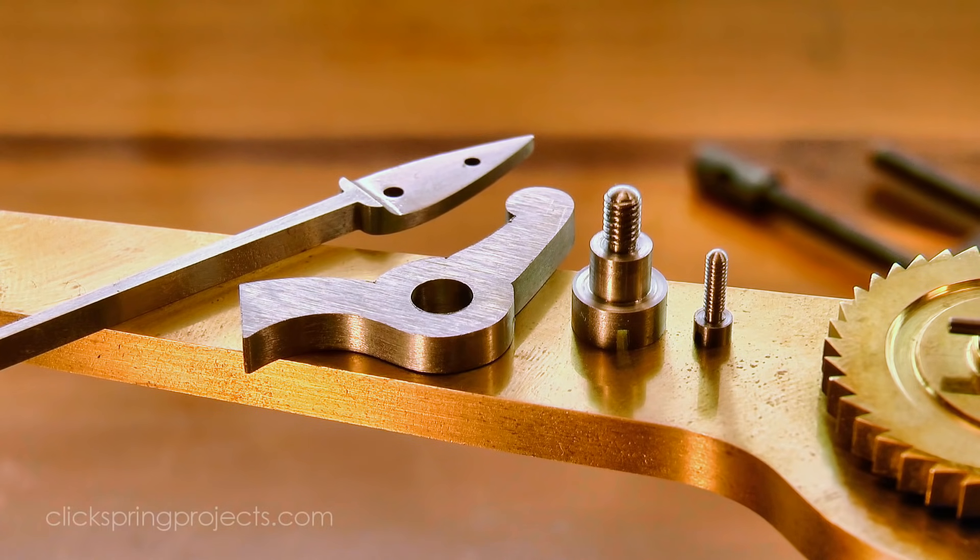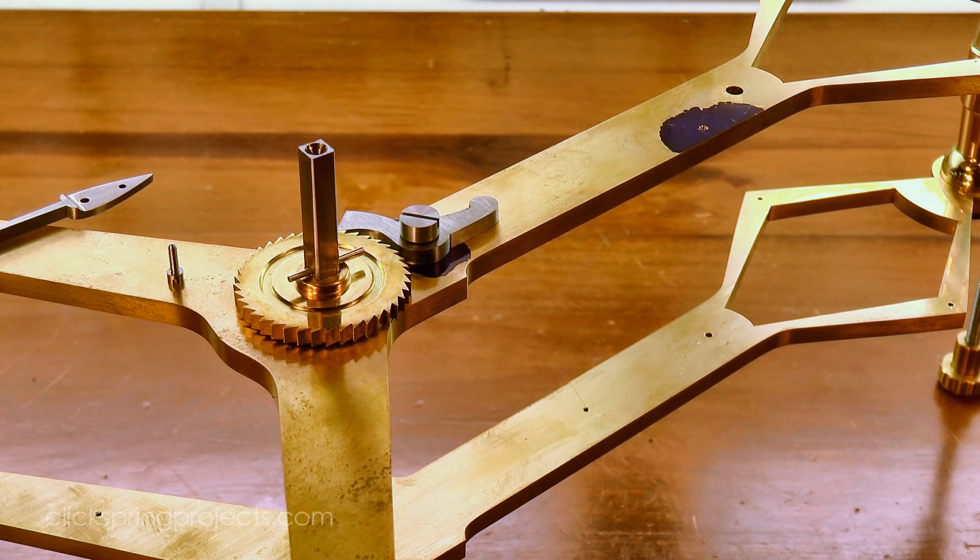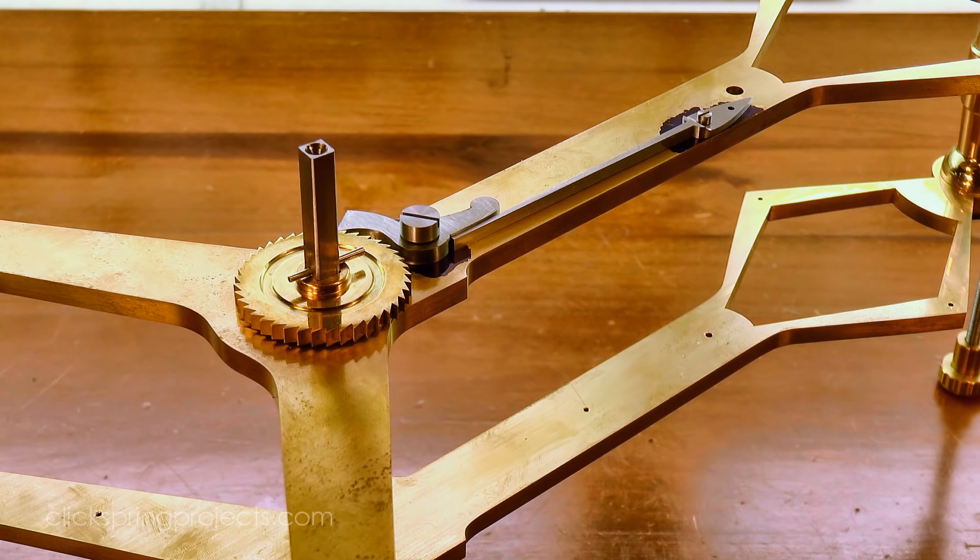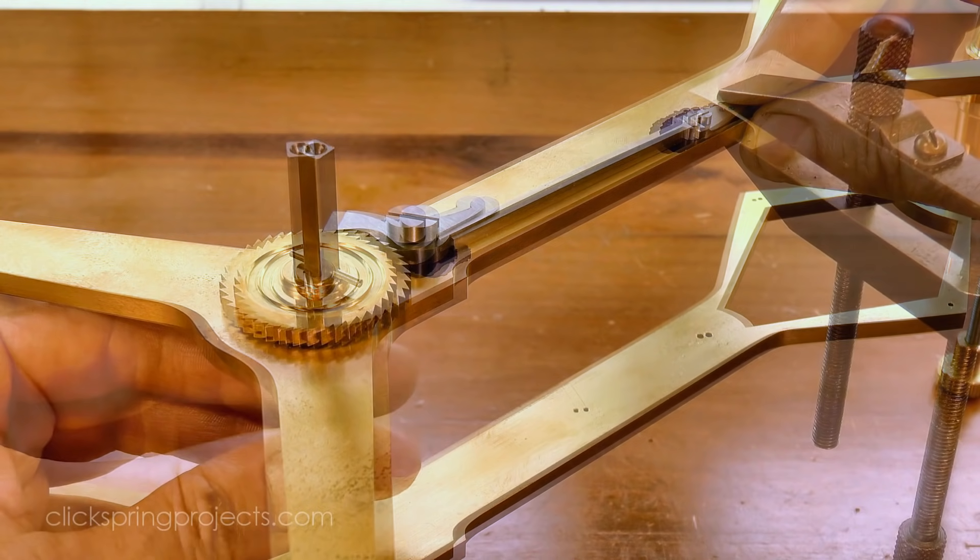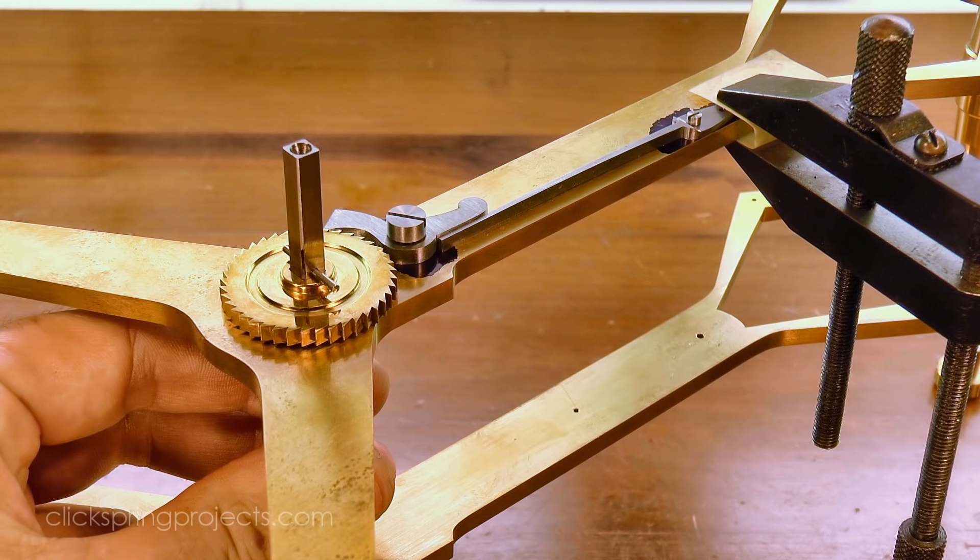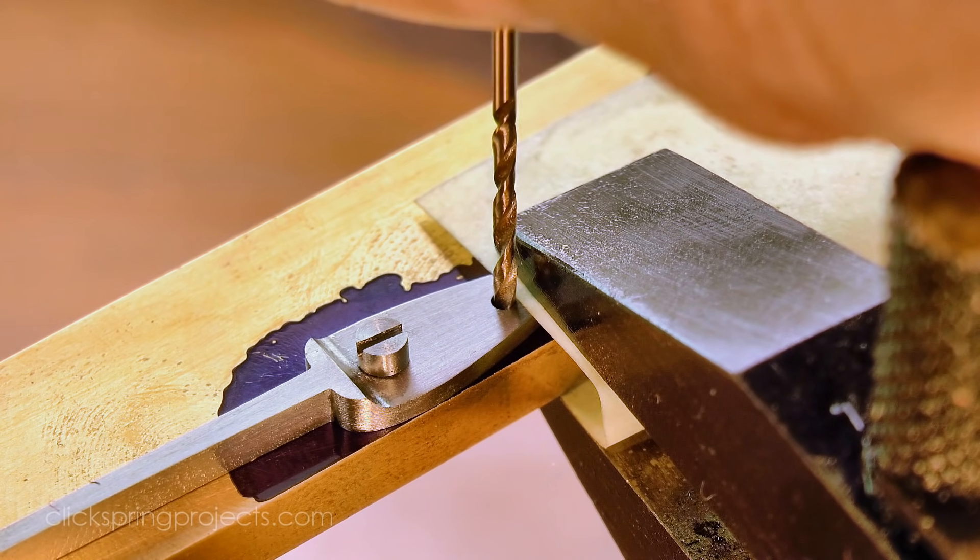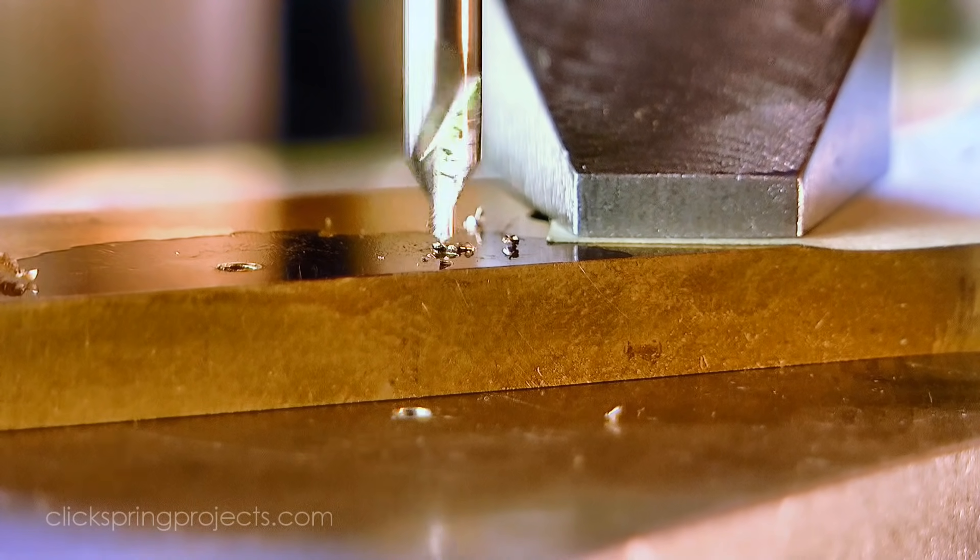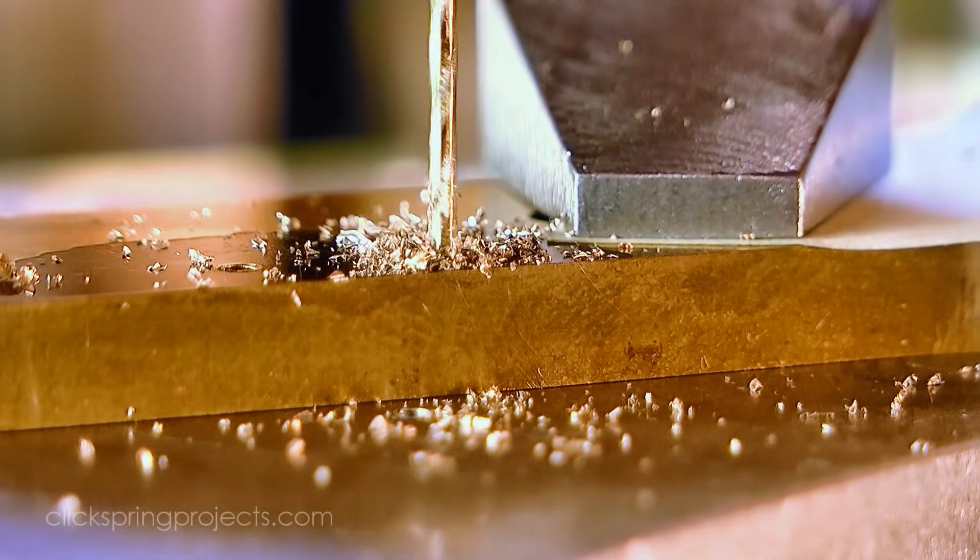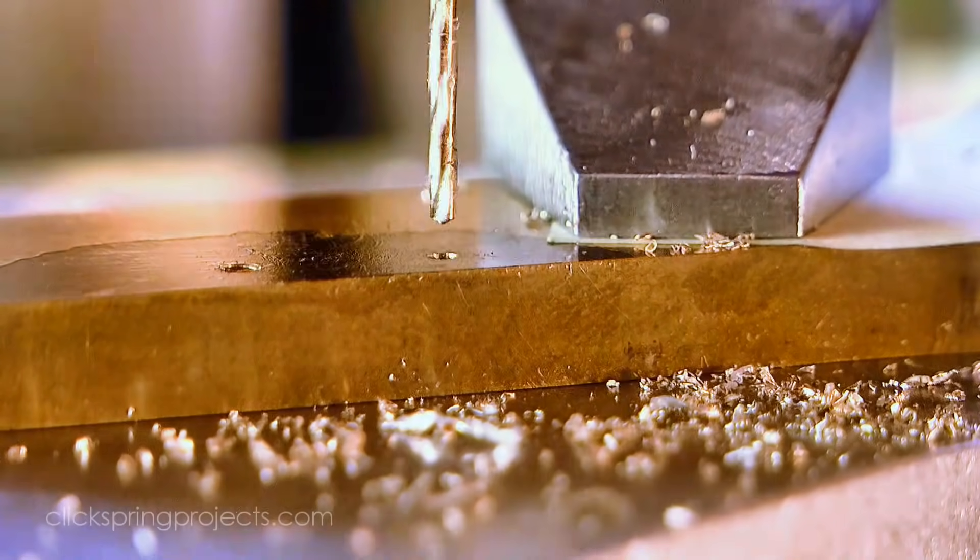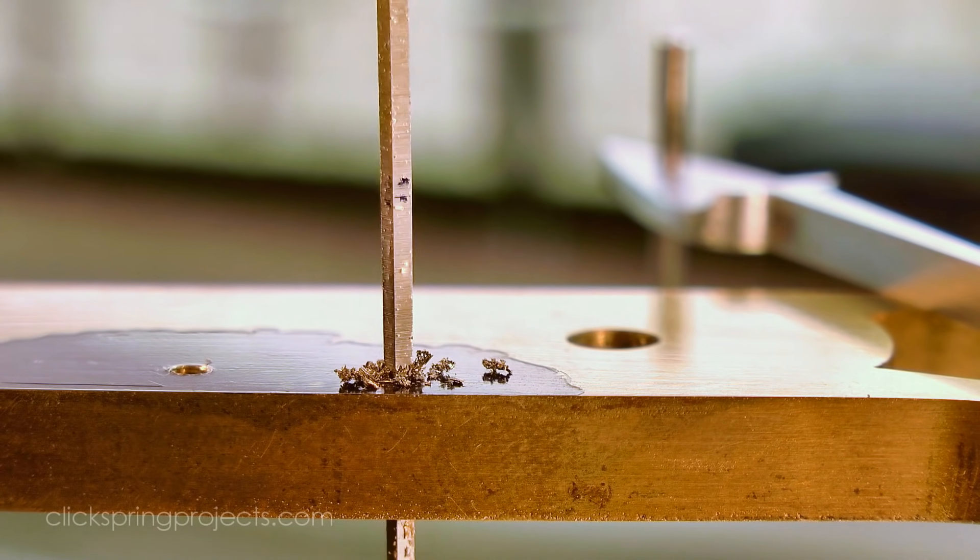So with all of the main pieces complete to the pre-finishing stage, I can fit them to the clock frames and have a look at how they perform together. A light tension can be manually placed on the click spring, but the final position is best determined with the help of a toolmaker's clamp. With the clamp holding the click spring in place, the position of the steady pin hole was marked and then drilled. The pin hole was taper broached, and the steady pin temporarily inserted to confirm the operation of the ratchet mechanism.